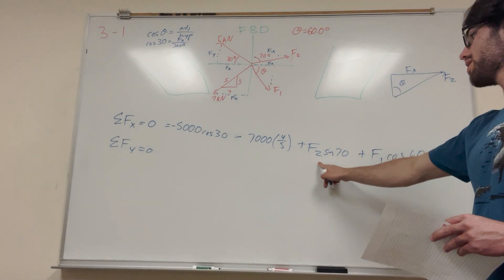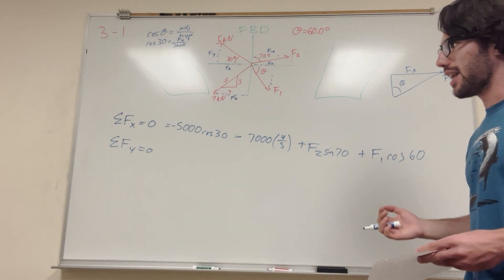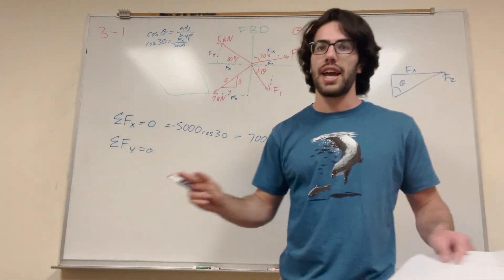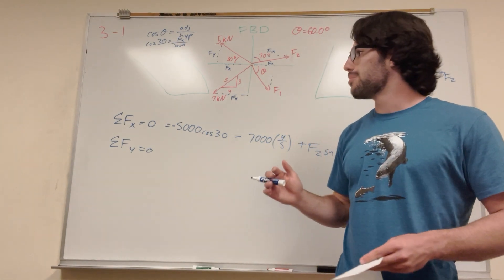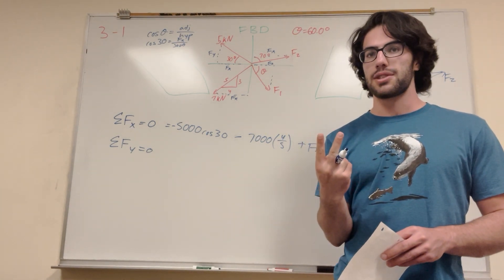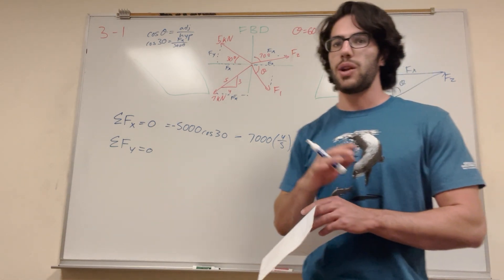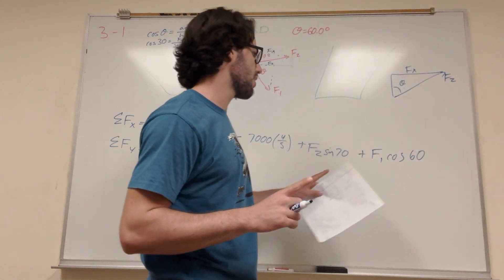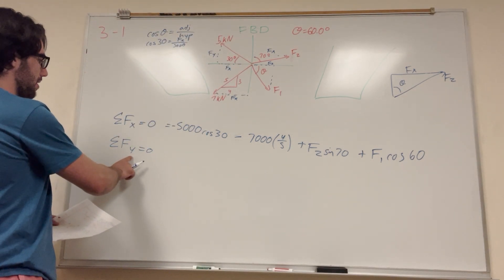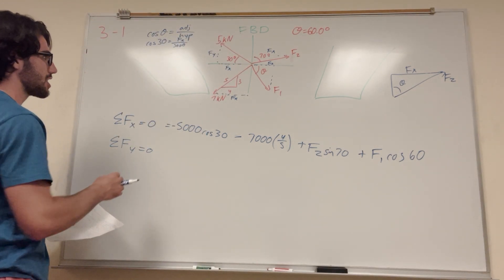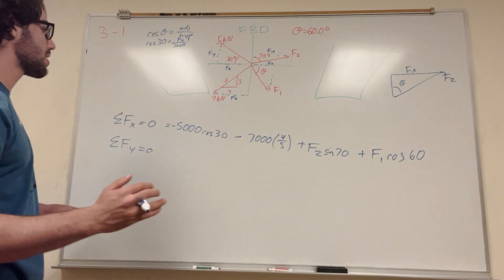We have two unknowns — force 1 and force 2. With one equation and two unknowns you can't find them because there could be many solutions. But with two equations and two unknowns you have a system of equations and you can find the answers. So we need one more equation — we're going to find the sum of the forces in the y direction.